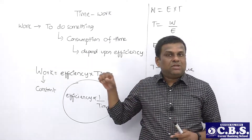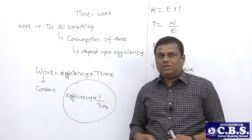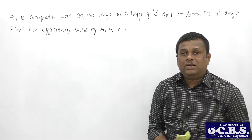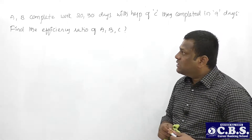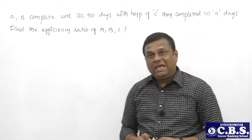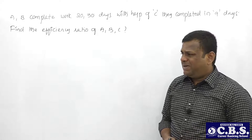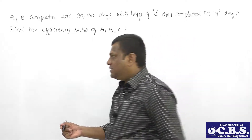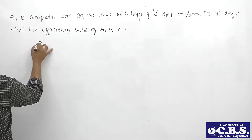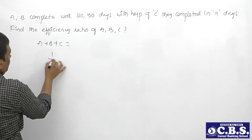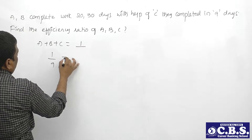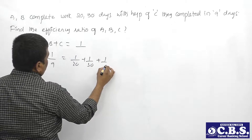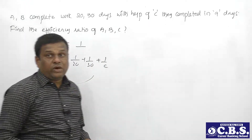Now let's discuss some questions based on this concept, including previous year questions. The first question: A and B complete work in 20 and 30 days respectively. With the help of C, they complete the work in 9 days. Find the efficiency ratio of A, B, and C. In the traditional method, we find C's individual time first, using 1/9 = 1/20 + 1/30 + 1/C - but that is a lengthy, time-consuming process.